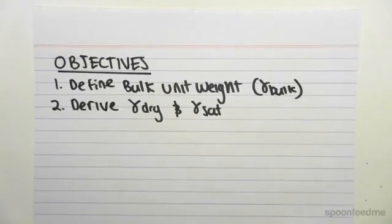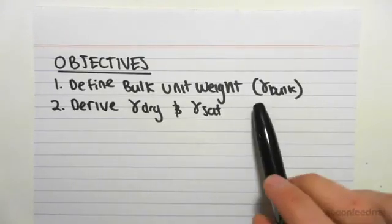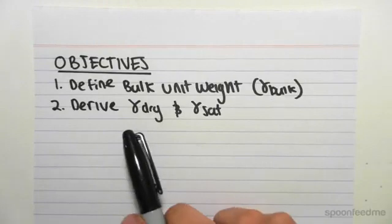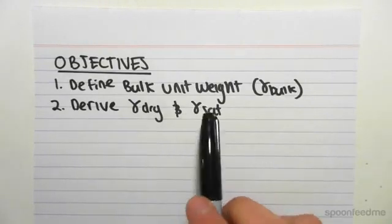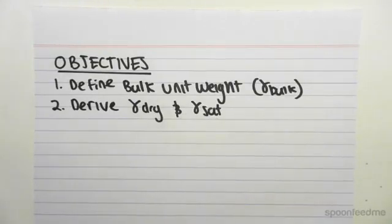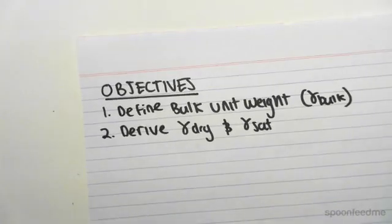Hey guys, the objectives for this video is to define the bulk unit weight, which is given by gamma bulk, and to derive an expression for gamma dry and gamma sat, which is the saturated unit weight and the dry unit weight.